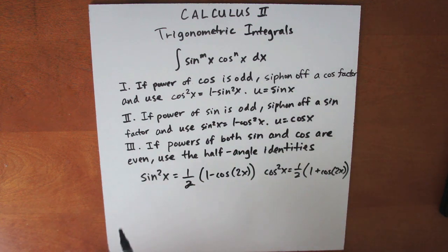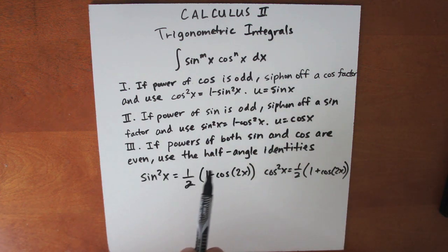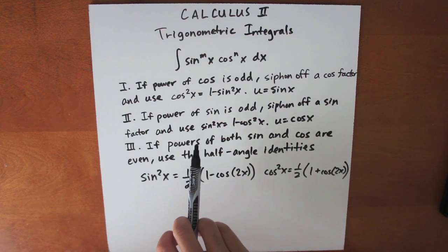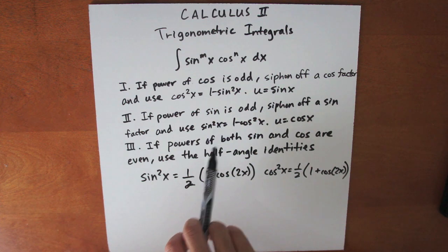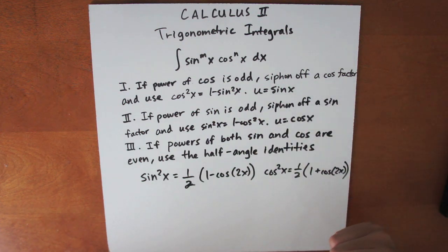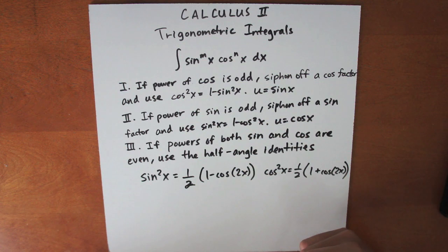Here are the three rules used to evaluate trig integrals. If the power of cosine is odd, siphon off a cosine factor and use the identity cosine squared x equals 1 minus sine squared x, then use the substitution u equals sine x. The second rule is: if the power of sine is odd, siphon off a sine factor and use sine squared equals 1 minus cosine squared x, then use the substitution u equals cosine x.